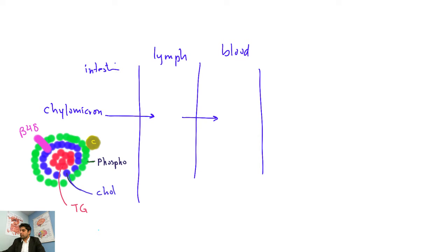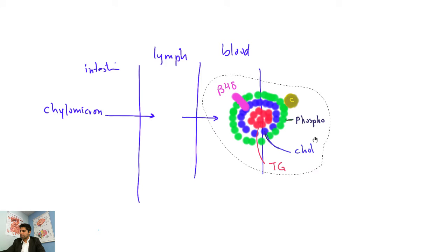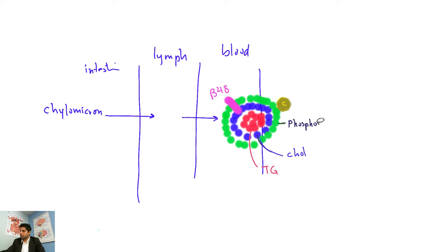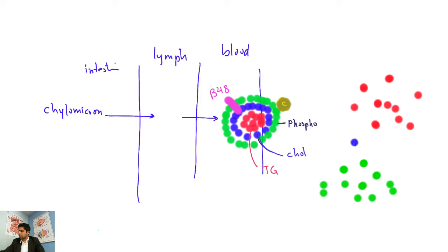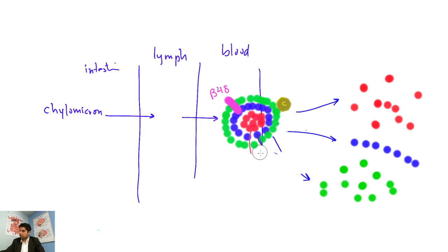Once the chylomicron is successfully transported into the blood, the lipids swim around in plasma. They need protein C to activate them. The chylomicron is then broken down back into its components: phospholipids, triglycerides, and cholesterol — with the help of phospholipase — and this breakdown occurs in the blood, not in the liver yet.